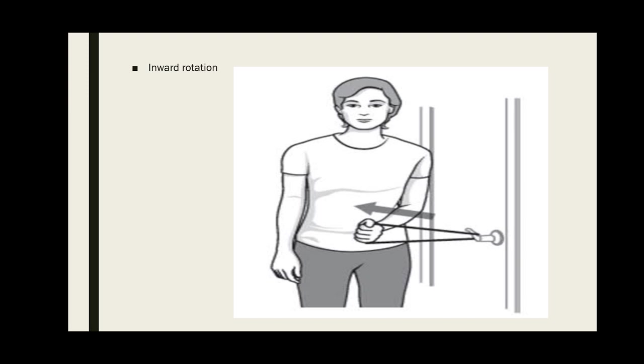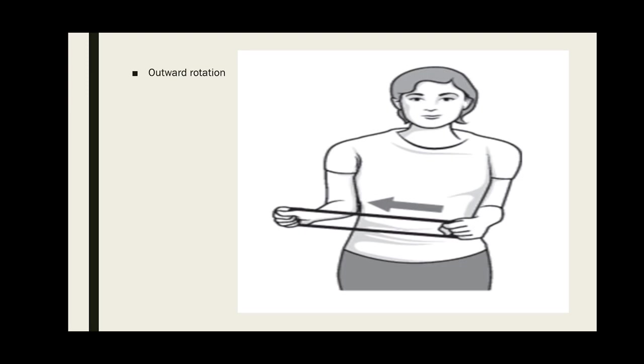Outward rotation: elbows close to the body at 90-degree angle, hold the thera band or exercise rubber band with both hands. Now slowly rotate the affected arm away from the midline and stay in this position for a few seconds. Relax and then repeat.